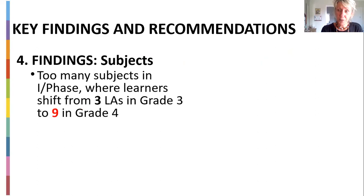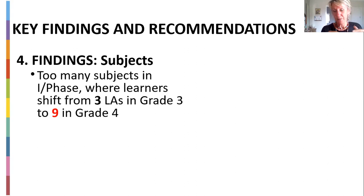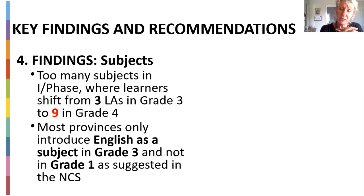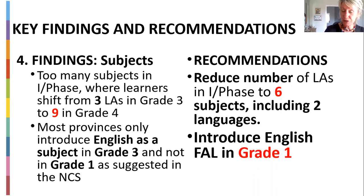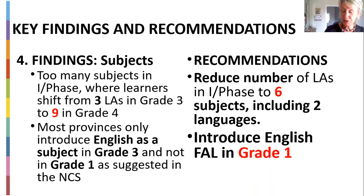The final finding the task force came across was there were too many subjects. In the intermediate phase, learners had to shift from three learning assessments in grade three only to nine in grade four — a huge jump. Also, they were supposed to start their first additional language in English in grade one, but this often only happened in grade three. So the recommendation was to reduce the number of learning assessments in the intermediate phase to six, not nine — four subjects including the two languages — and to introduce English in grade one.